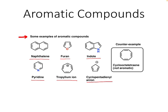Off to the right-hand side, we have a counterexample. Cyclooctatetraene is not aromatic, even though it looks like an aromatic compound with alternating double bonds. There's actually a very specific definition for aromatic compounds, so let's go over that.